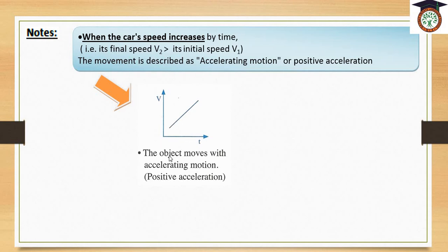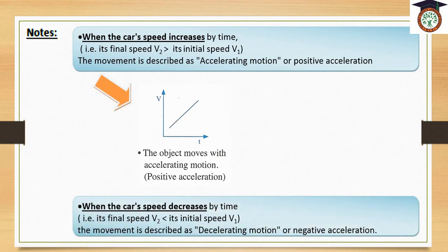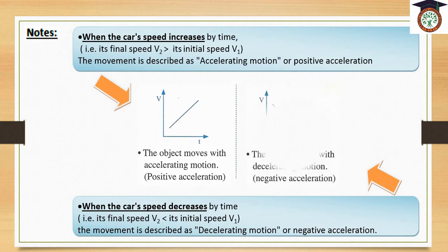The object moves with accelerating motion. We can write for this graph a comment: the object moves with accelerating motion or positive acceleration. We have another case when the car's speed decreases by time — the final speed V2 is less than the initial speed V1. So the movement is described as decelerating motion or negative acceleration, which means the speed of the car decreases as time passes. We can represent it graphically by drawing a graph between velocity and time showing a declining straight line.